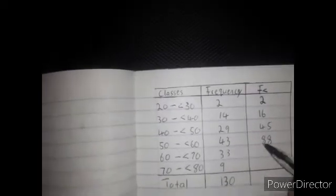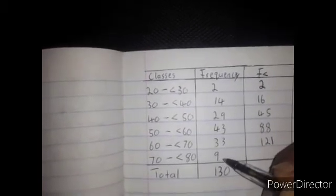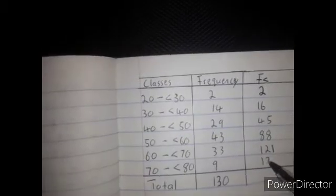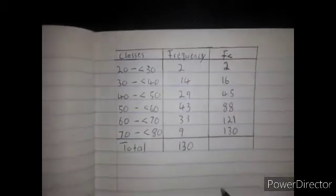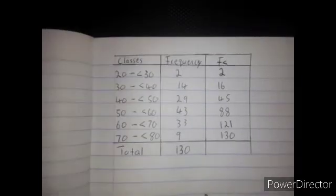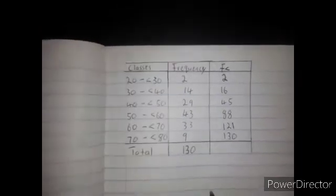88 plus 33 is 121, 121 plus 9 is 130. Now the second step is to identify the median interval by finding the first cumulative frequency that exceeds the median position.